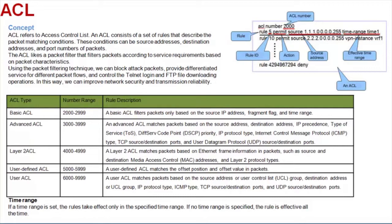For example, ACLs 2000 to 2999 are basic ACLs. Basic ACLs use source IP addresses as the packet matching condition. ACLs 3000 to 3999 are advanced ACLs. These advanced ACLs use source IP addresses, destination IP addresses, and TCP/UDP port numbers as the packet matching conditions. The other types of ACLs are not described here. You can configure different types of ACLs according to your needs.